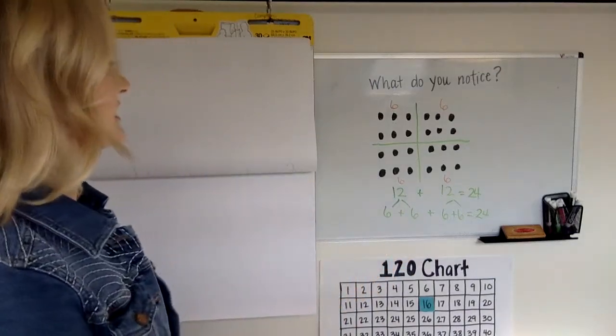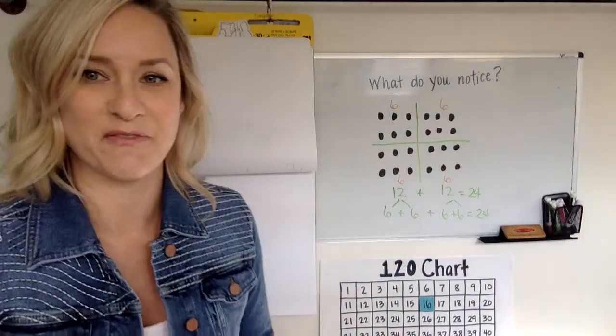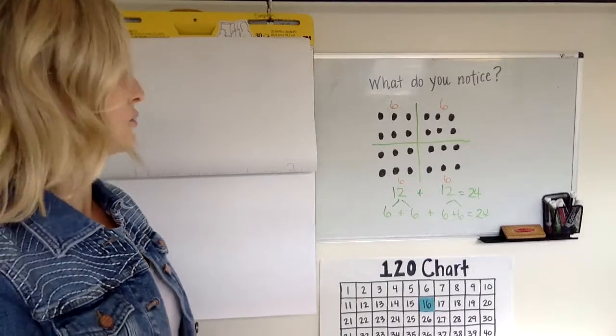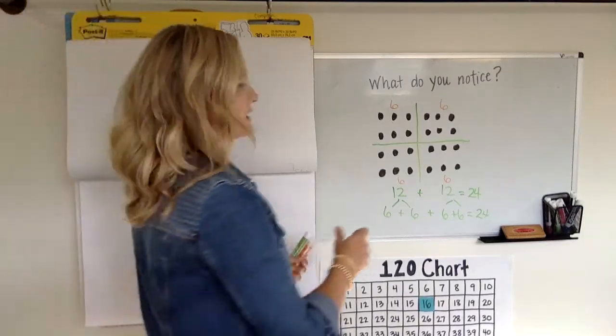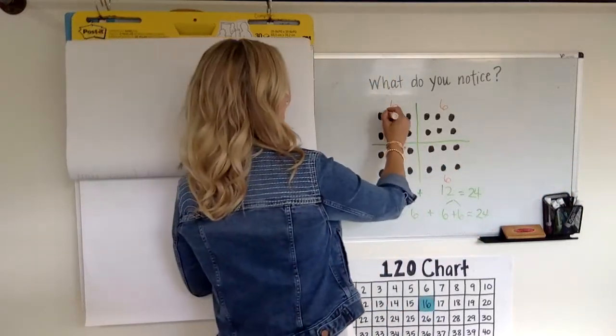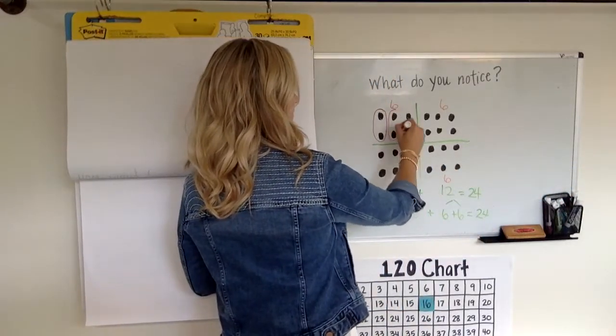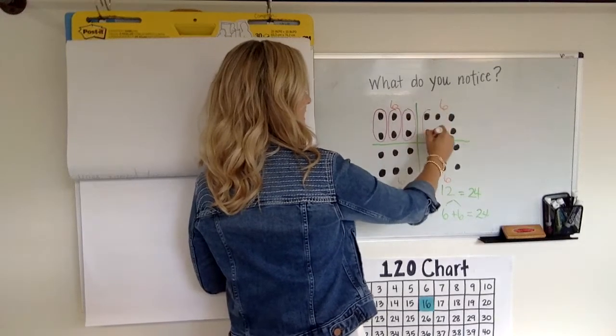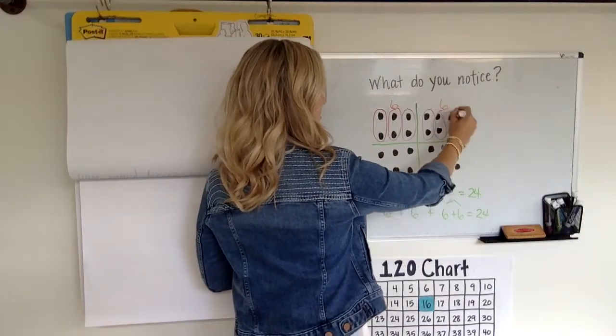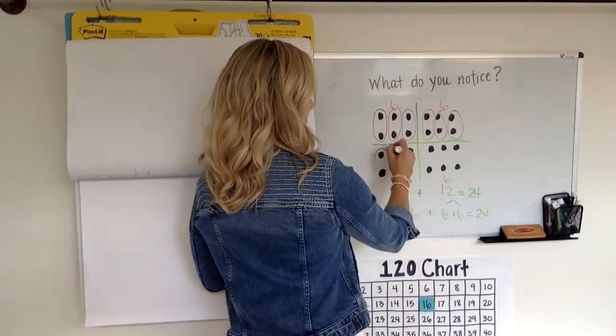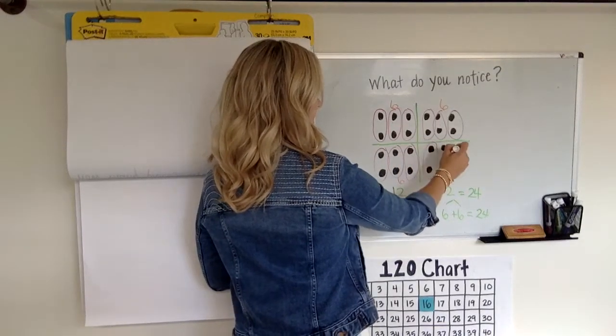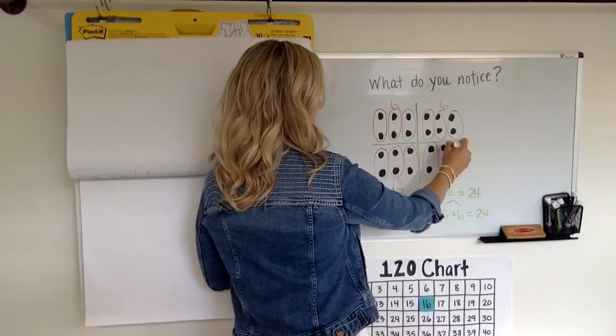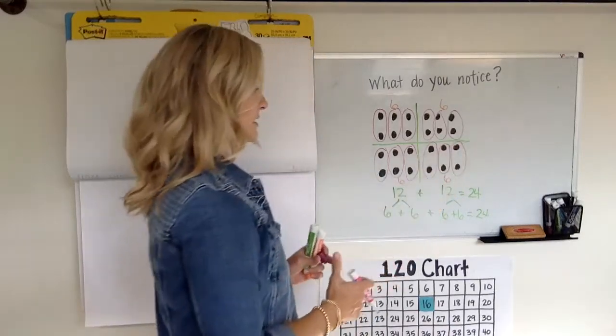Hmm, I'm trying to guess what else you might notice. I wonder, did anyone count them by twos? Did anyone put them in groups of two to count? Let's see. Maybe you did. Maybe you said two, four, six, eight, 10, 12, 14, 16, 18, 20, 22, 24. I bet some of you did that too.